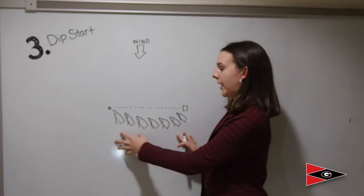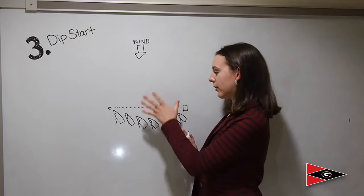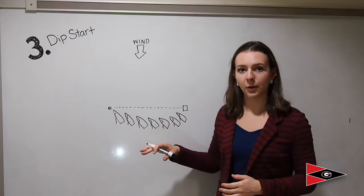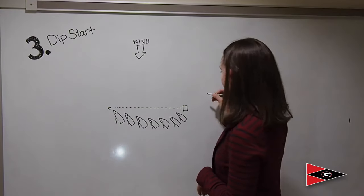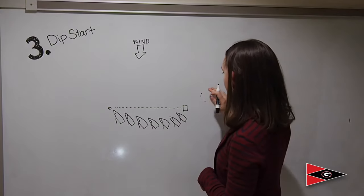What happens is the boats on the ends of the line will be closer to the line, but the ones in the middle are going to sag down a little bit because they're a little unsure of where the line actually is.